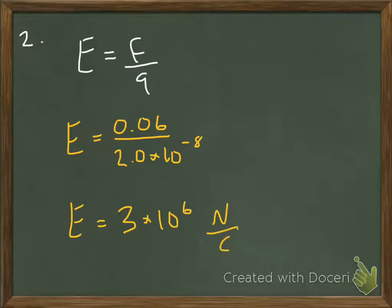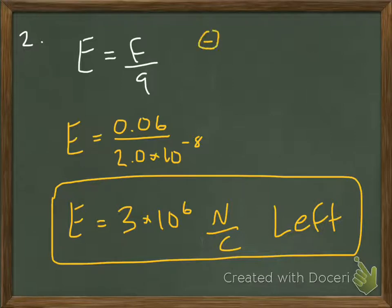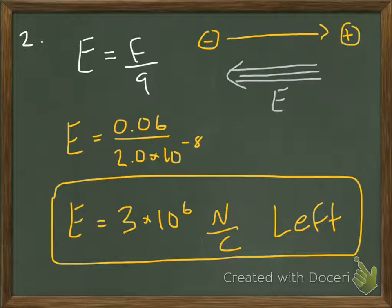So we found the electric field. No big deal. But what about the direction? How did I get to the left? Well, remember, electric field is always positive to negative. It's just a convention. Always positive to negative.